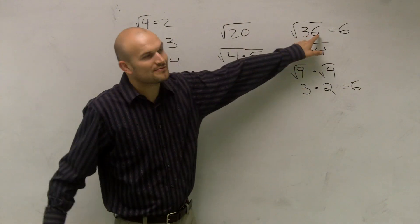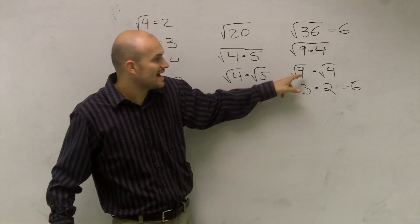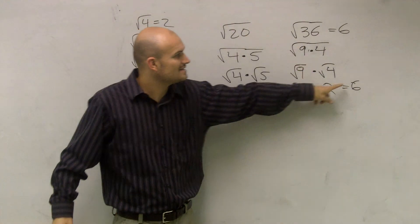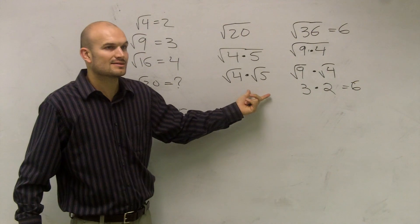Well, anyways, if you guys notice, the square root of 36 is equal to 6, right? The square root of 9 times the square root of 4 is still equal to 6. So, yes, you can separate it like this.